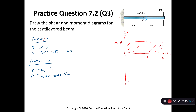For the bending moment diagram, if you look at the linear equations, the coefficient of x tells you the slope direction — positive means upward slope, negative means downward slope. The constant term represents the y-intercept. It's good to check this beforehand so you can set up your axes correctly, whether values will be positive or negative.